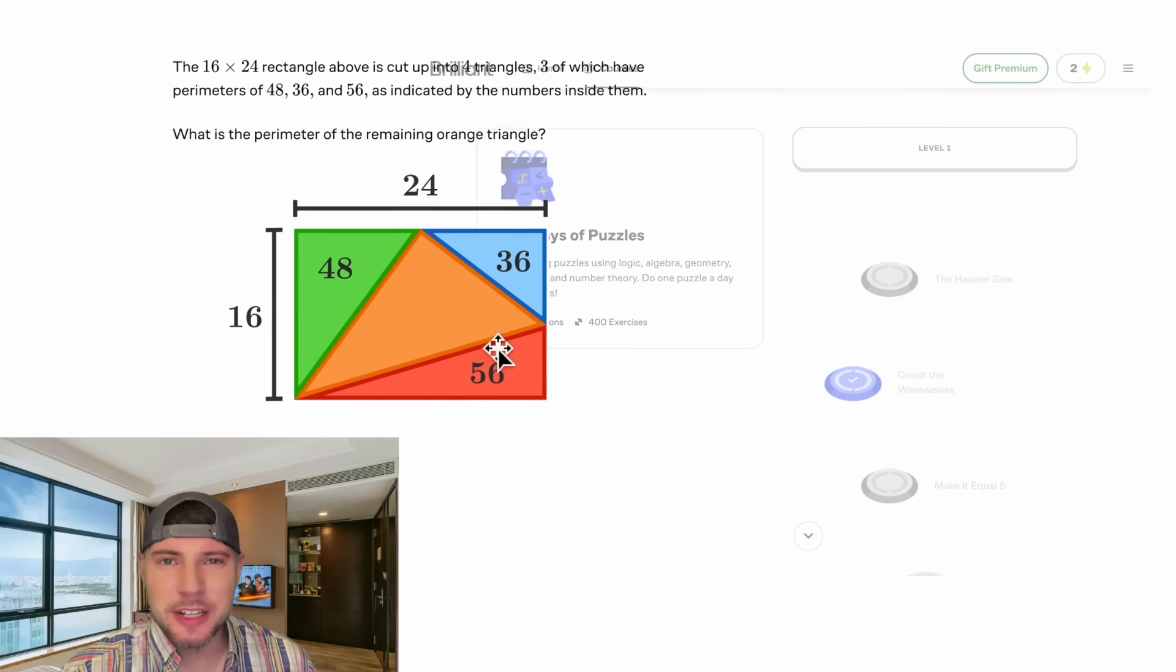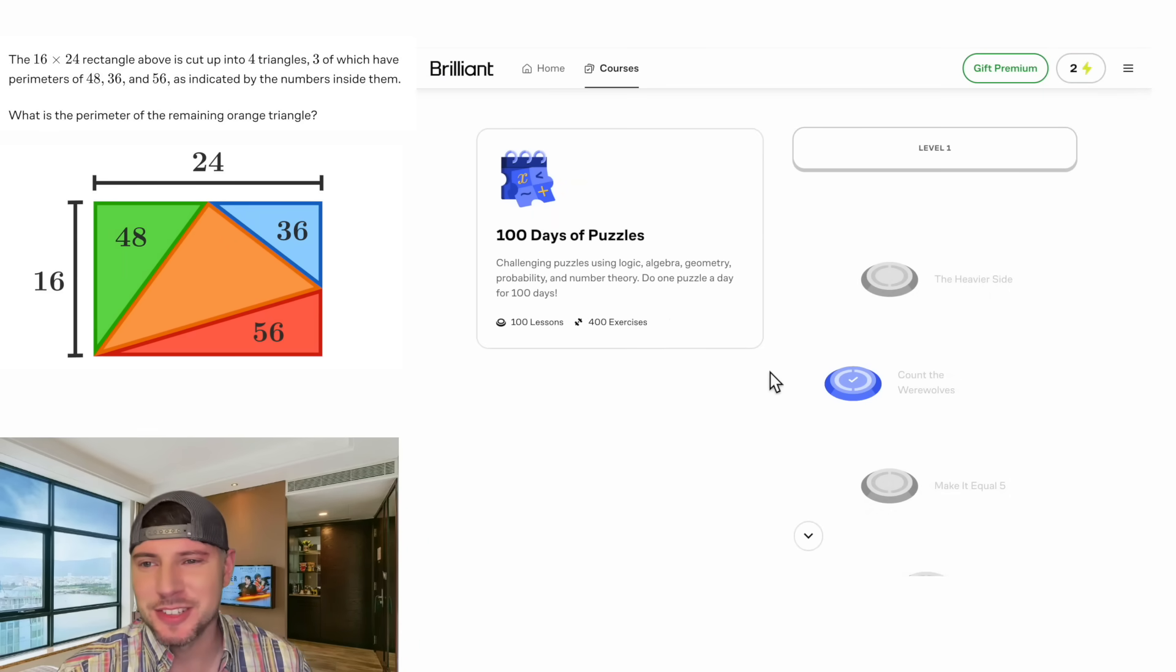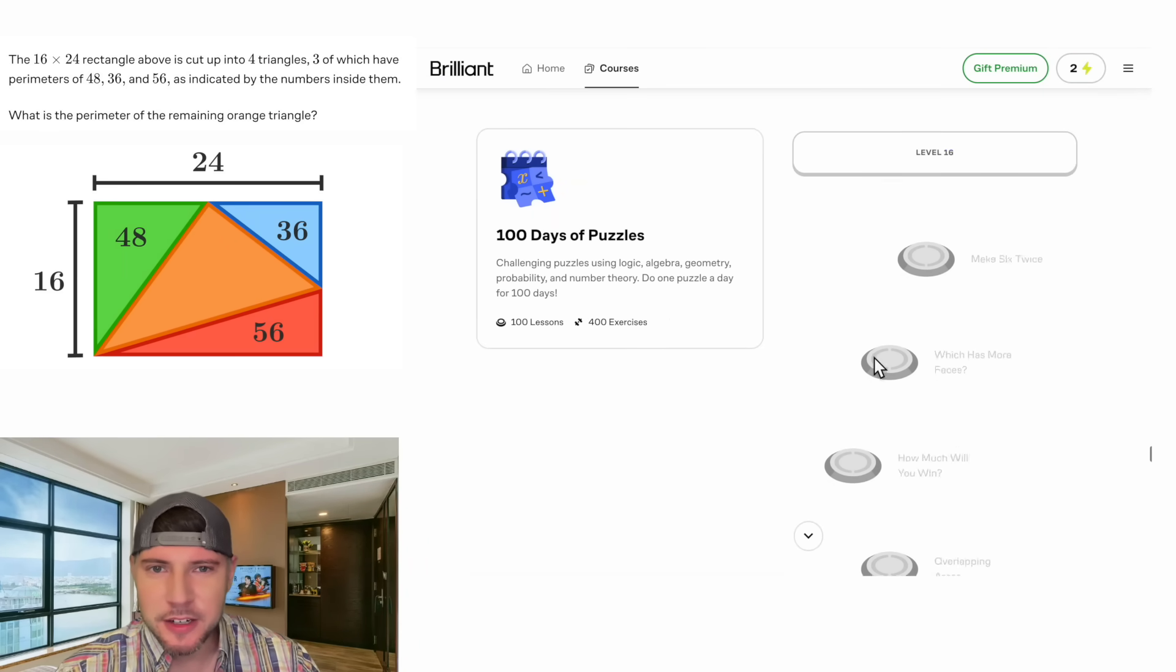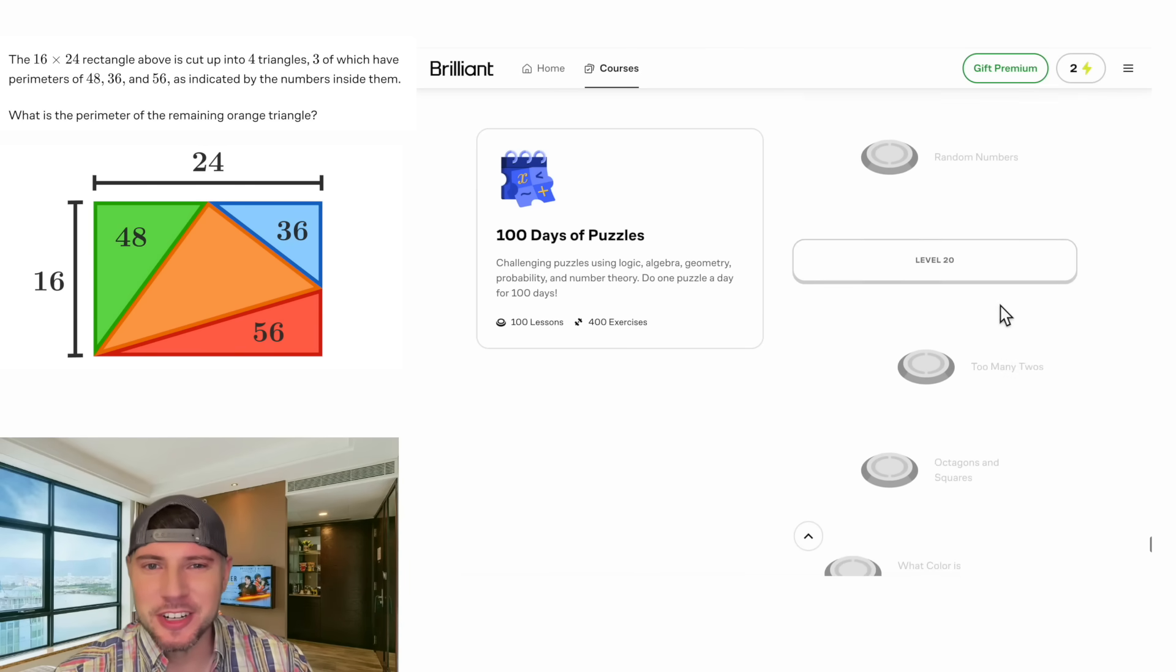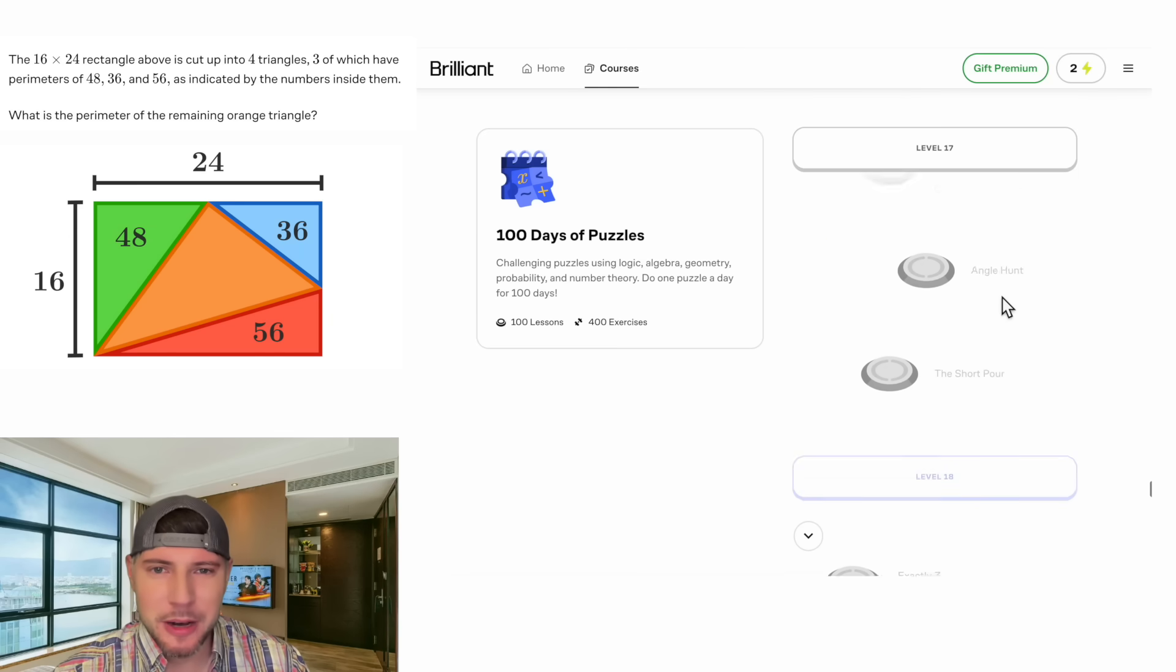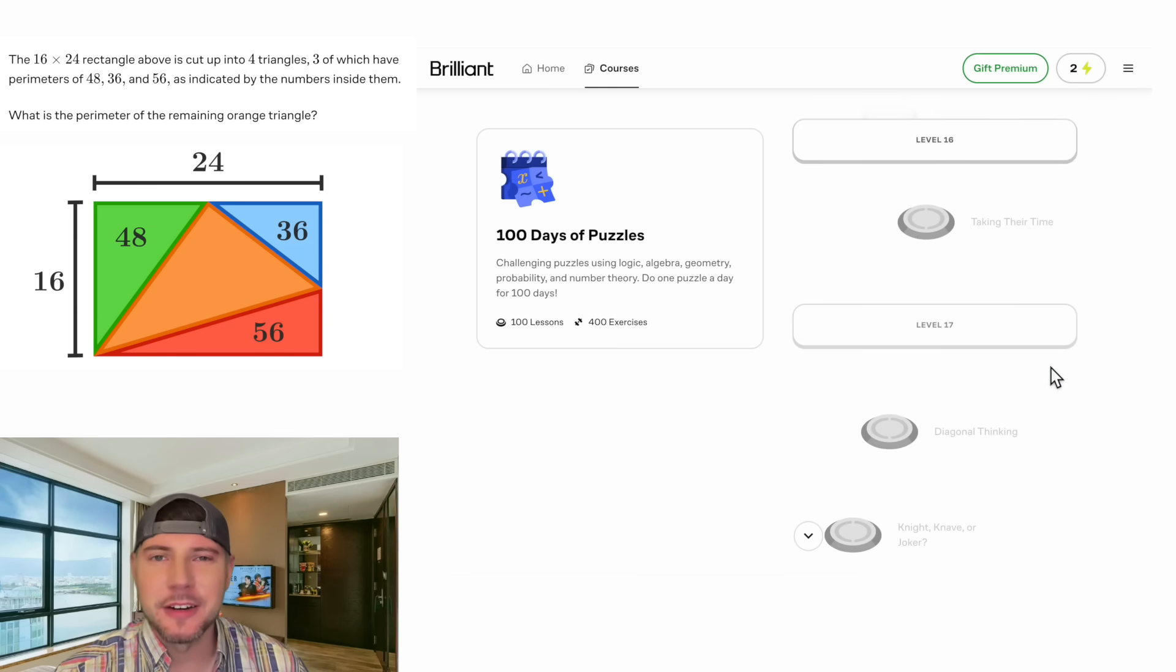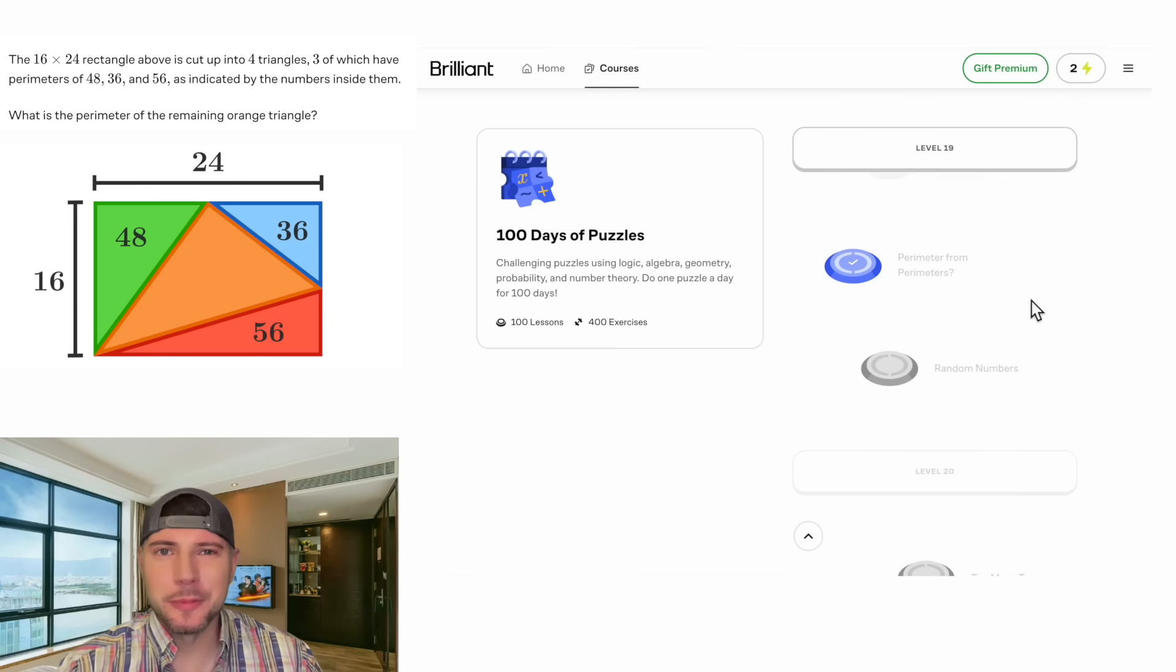I got this puzzle directly from Brilliant. It's part of the 100 Days of Puzzles. It's all the way down here, level 19, right here. Perimeter from perimeters. I started going through them backwards. I started at level 20, and I'm around here right now. This is the one we're going to do right now, perimeter from perimeters.